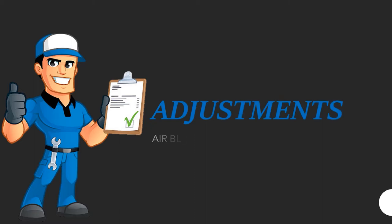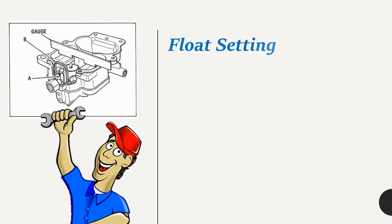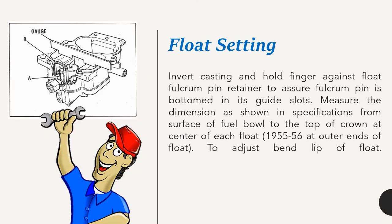Adjustments — Air Bleed Design. Float setting: Invert casting and hold finger against float fulcrum pin retainer to assure fulcrum pin is bottomed in its guide slots. Measure the dimension as shown in specifications from surface of fuel bowl to the top of crown at center of each float.